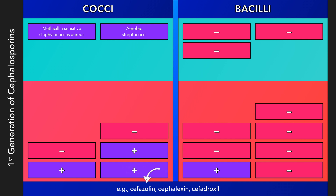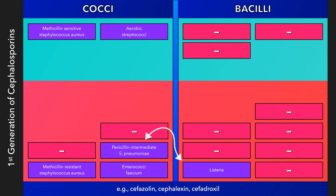Cefazolin is an intravenous first-generation cephalosporin that is widely used for perioperative prophylaxis to prevent surgical site infections. None of the first-generation cephalosporins, however, are helpful for gram-positive organisms in the red area, including penicillin-resistant pneumococci, methicillin-resistant staphylococcus aureus, enterococci, and listeria.